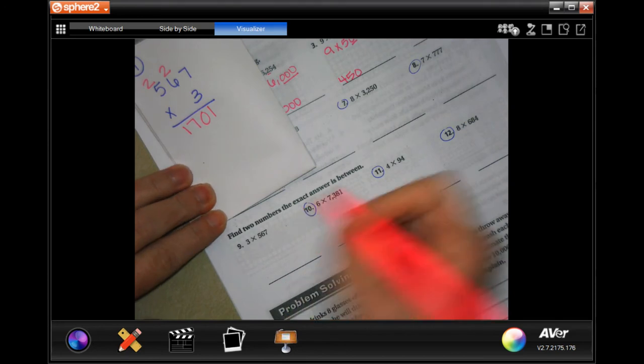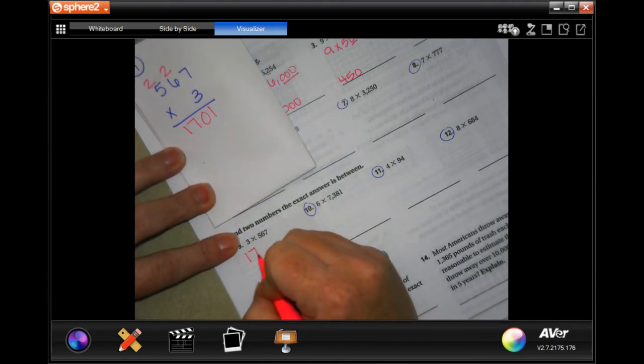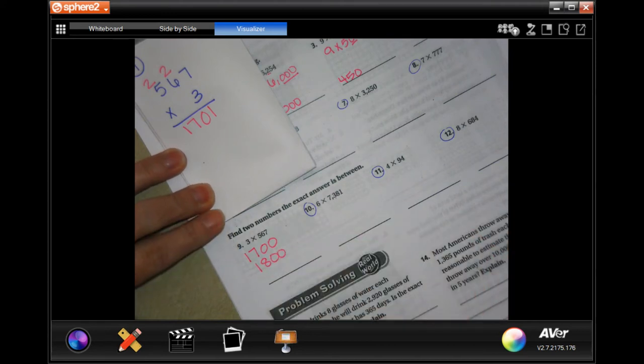Three times five is 15, plus two more is 17. So 1,701. So now find the two numbers the exact answer is between. I would say 1,700 and 1,800. Those are my two estimates.